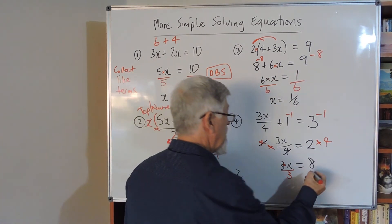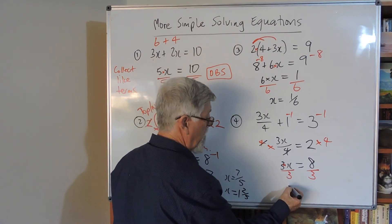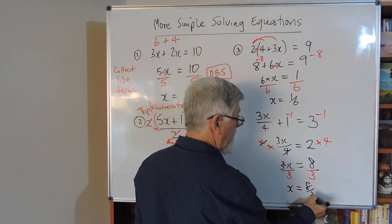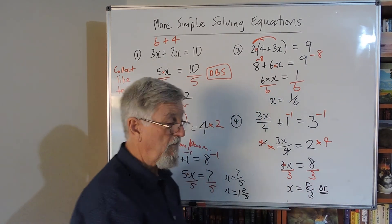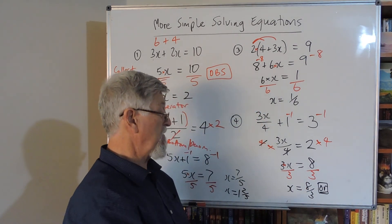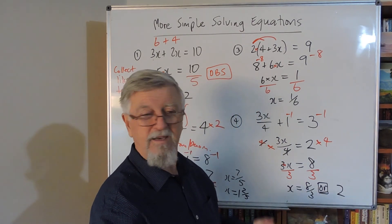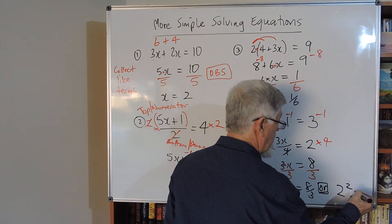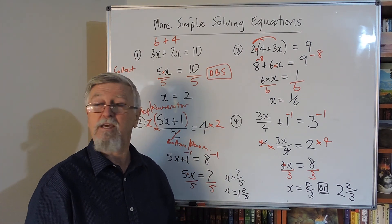Do it to the right side, do it to the left side. Three into three goes once, I don't have to write the one for the x. The answer is 8/3, or we could write it as a mixed number: 3 into 8 goes twice with two left over, so 2 and 2/3.